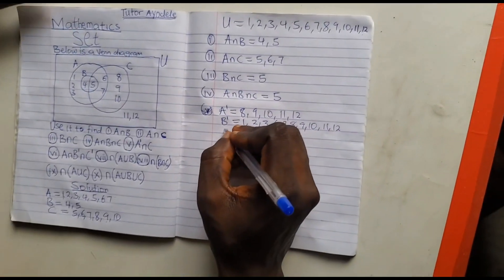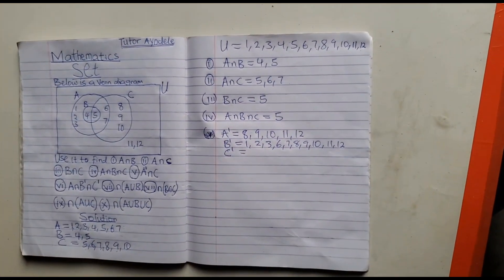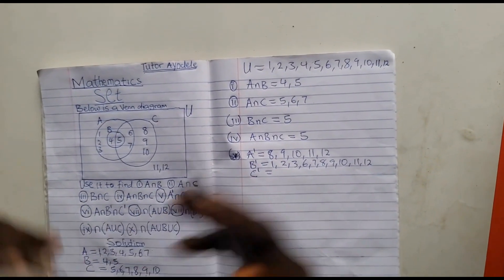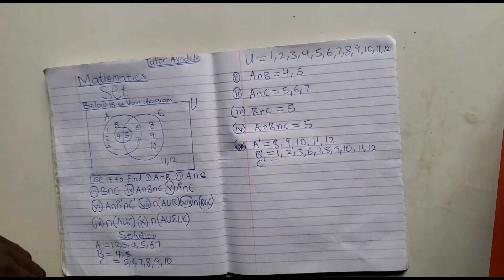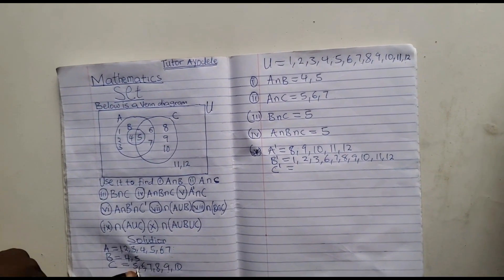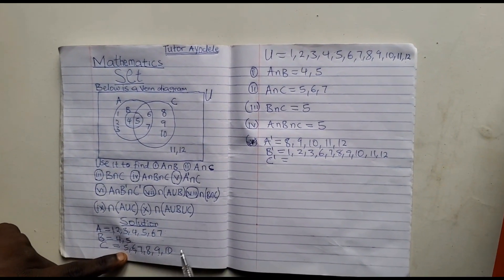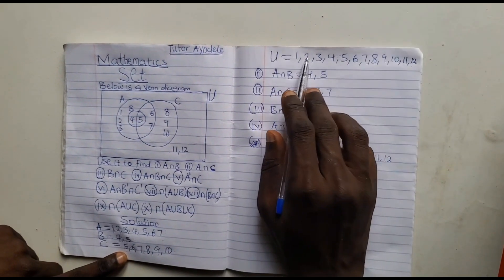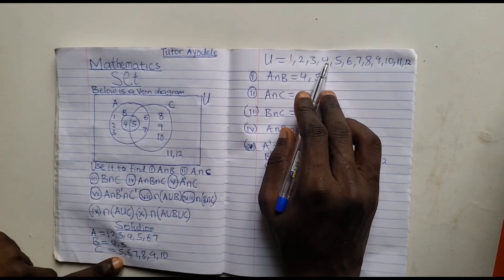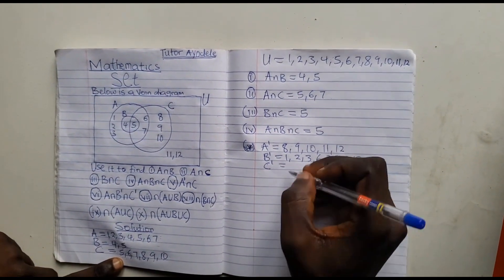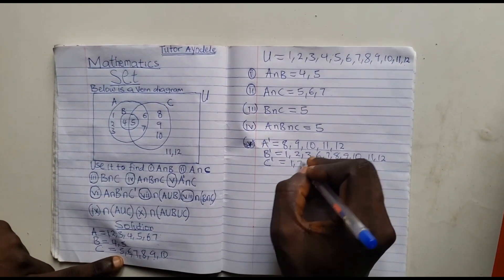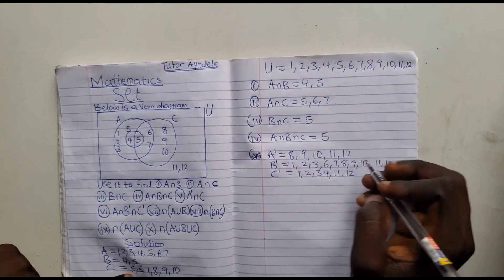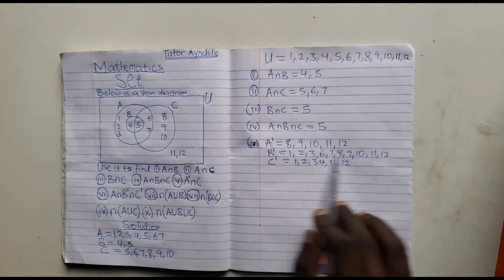Now let's find C prime. C prime simply means elements that are not in C, that are also in the universe. C has {5, 6, 7, 8, 9, 10}. So the elements not in C but in the universe are: 1, 2, 3, 4, 11, and 12. So C prime = {1, 2, 3, 4, 11, 12}. So that is our A prime, our B prime, and our C prime.